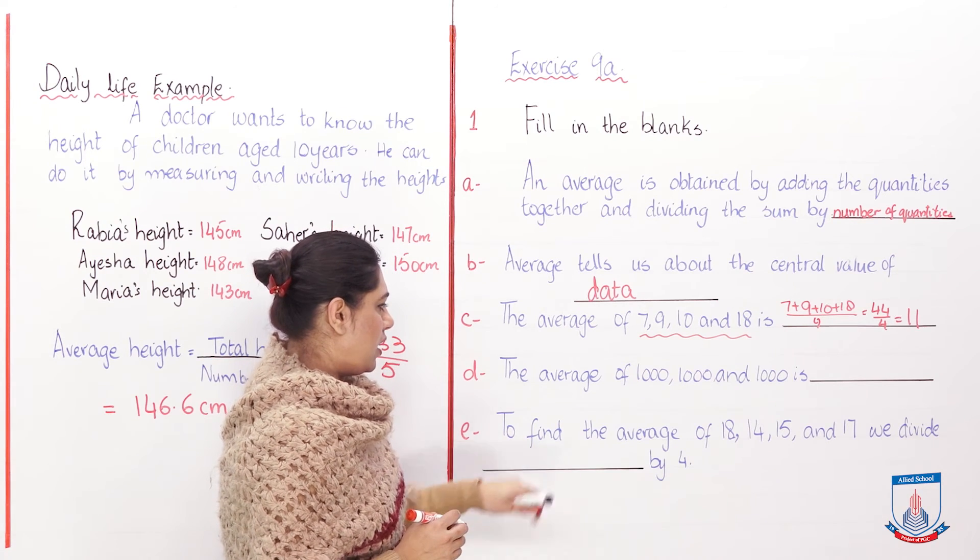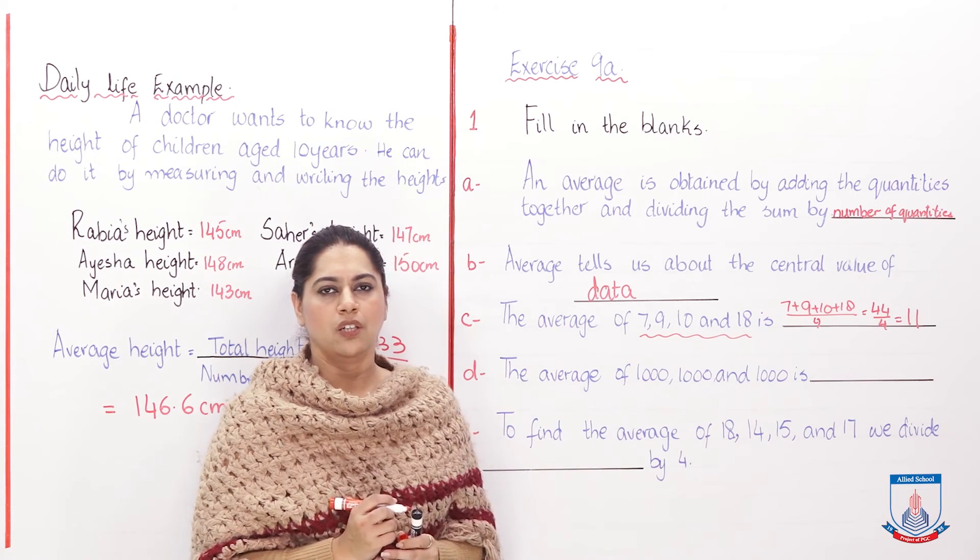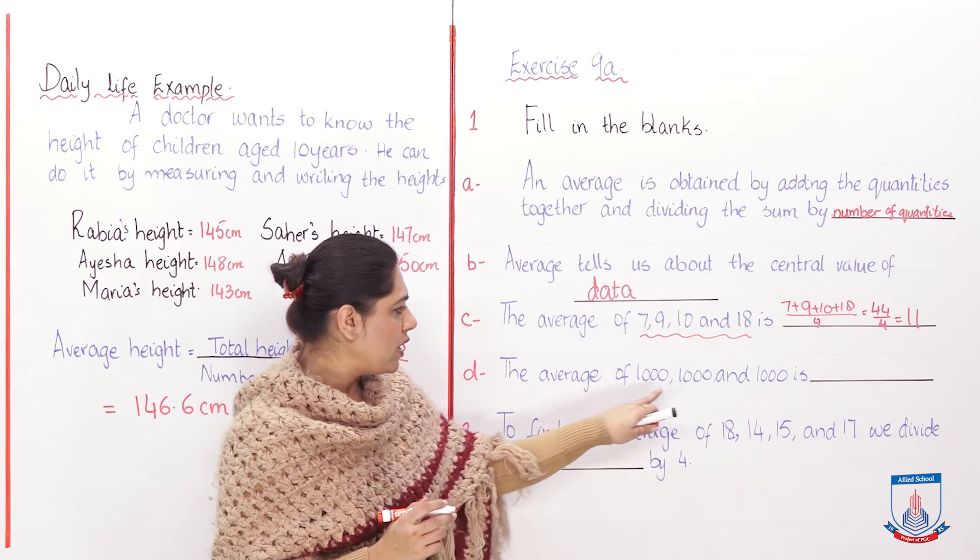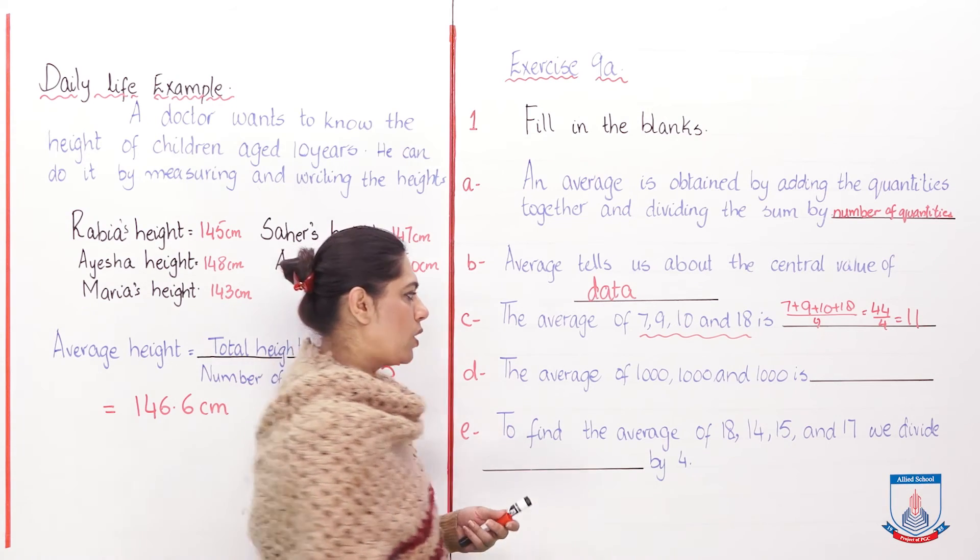Now we have part d: the average of 1000, 1000, and 1000 will be what do you think? Is any number different from the other? No, they are all the same, so its average will be 1000.